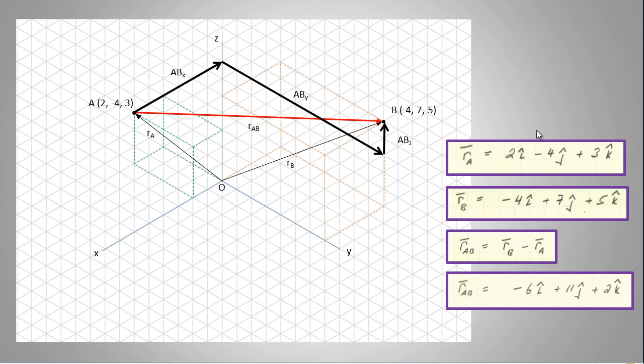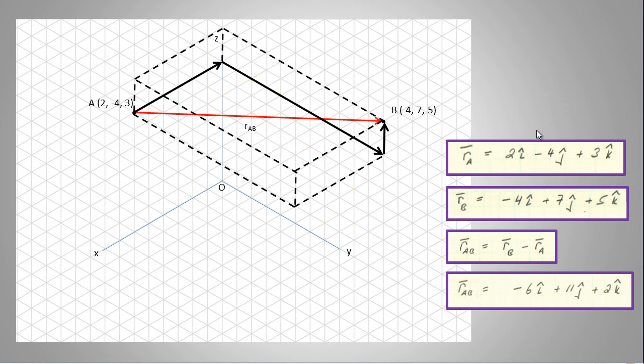We might again note that vector RAB itself has three vector components aligned along the Cartesian coordinates: ABX, which points in the negative X direction, ABY, which points in the positive Y direction, and ABZ, which points in the positive K or positive Z direction.